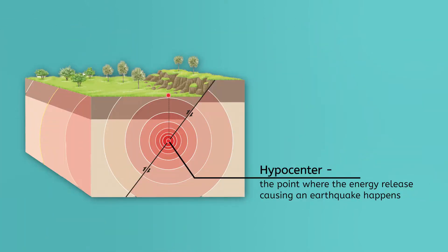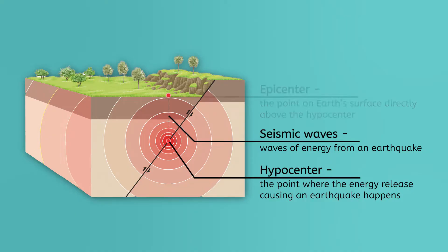The point where the energy release happens is called the hypocenter, and it's where the earthquake starts. The released energy then ripples out from the hypocenter in seismic waves. It moves through the Earth's crust until it reaches the epicenter,